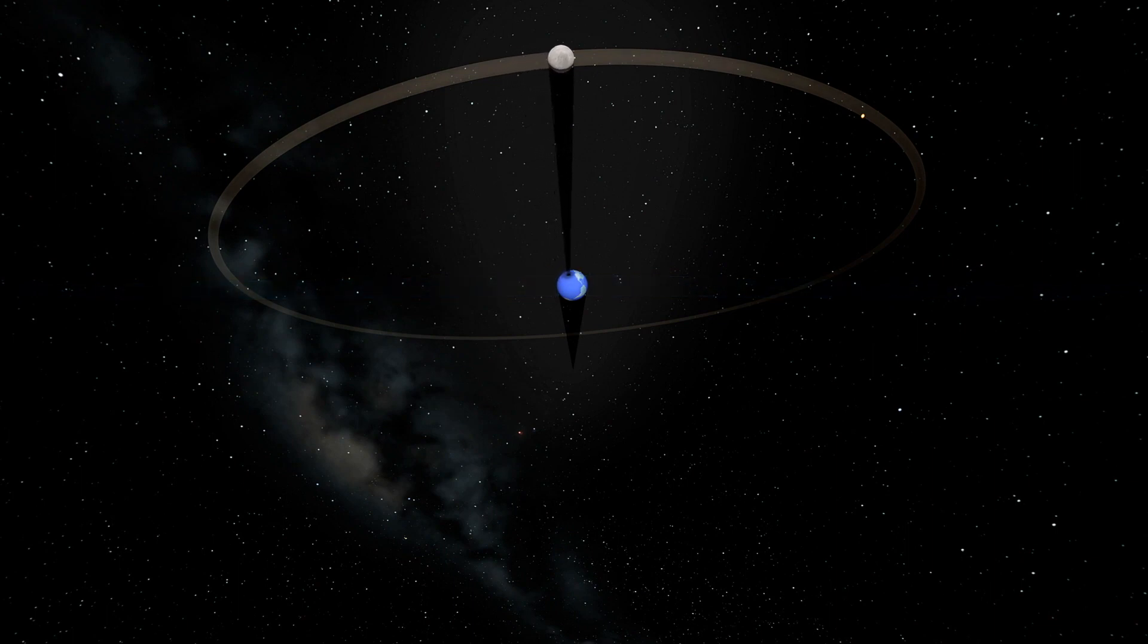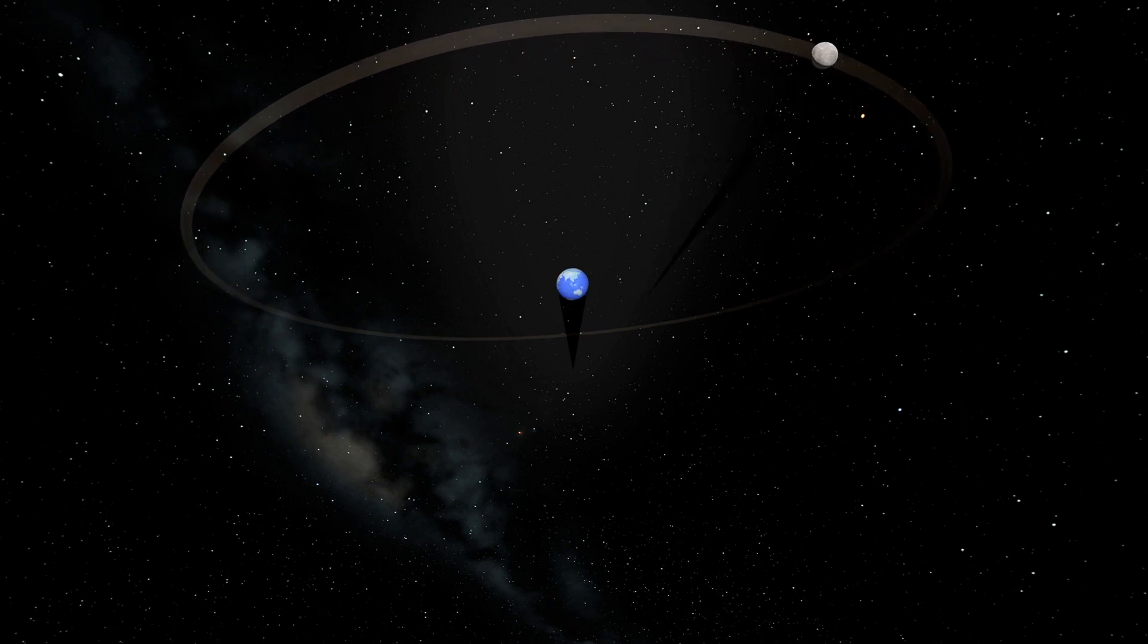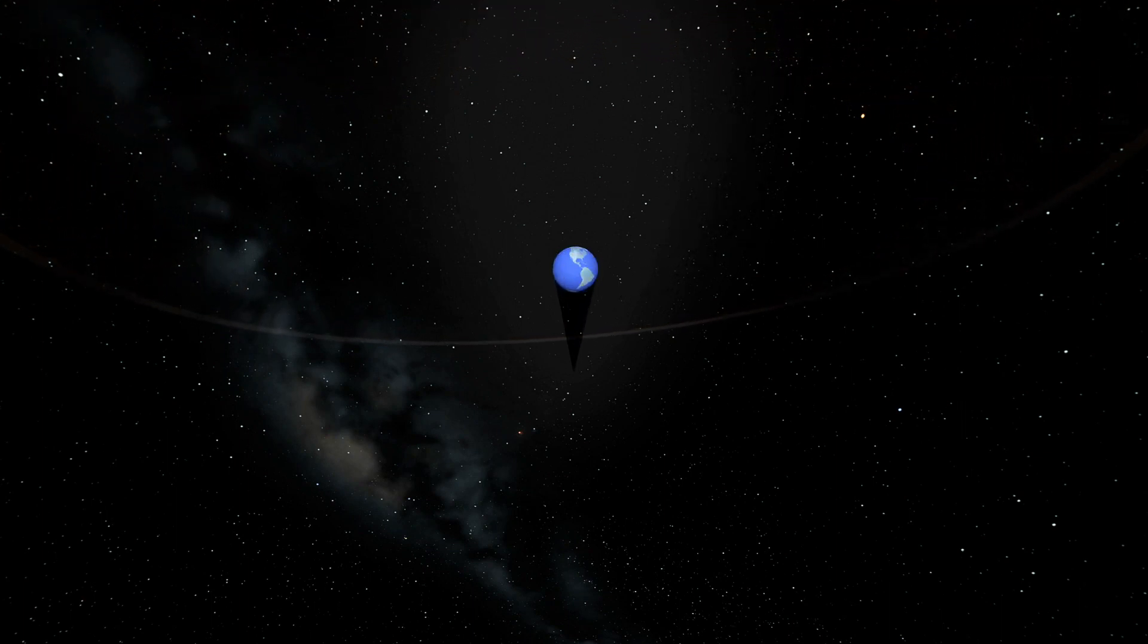In a solar eclipse, the moon casts a shadow on the Earth, but only on a small part of our planet. Two weeks later, the moon's path crosses the sun's path at full moon. At this time, the Earth casts its shadow on the moon.